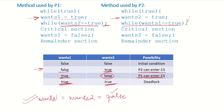Until one of them enters the critical section, the values cannot be changed. P1 is waiting for wants2 to be changed, and P2 is waiting for wants1 to be changed. So if both processes start running and change their respective wants variables to true, there is a possibility of deadlock.